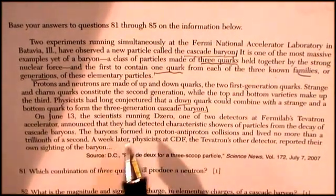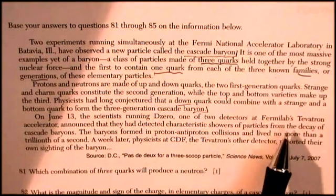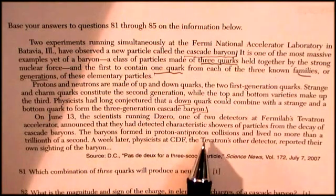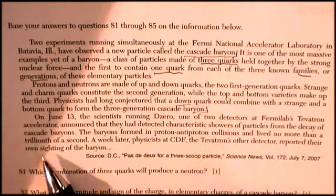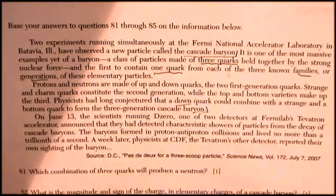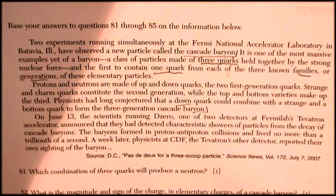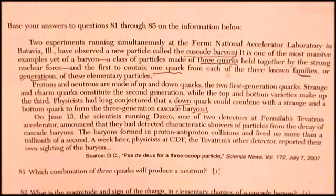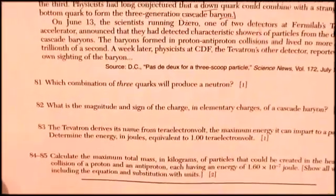On June 13th, the scientists running one of the two detectors at Fermi Labs announced they detected characteristics showing particles in the decay of cascade baryons. They formed in proton-antiproton collision and lived no more than a trillionth of a second, while life is short. A week later, physicists at CDF detected their own baryon. Yeah, but they didn't do it first. All right, let's see what questions they're going to possibly ask about this thing.